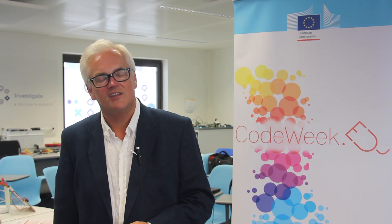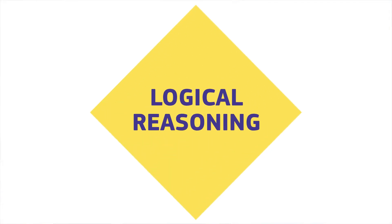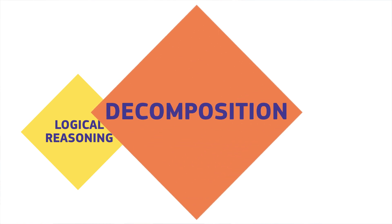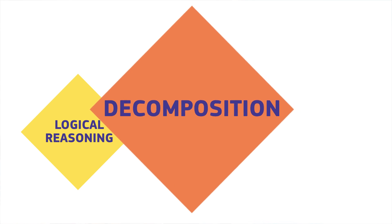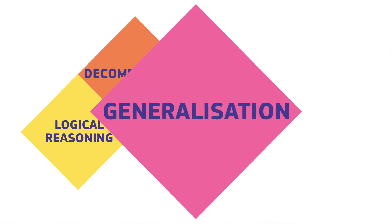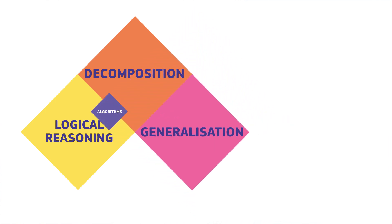In school it can be helpful to think about some of the common elements of computational thinking. For example, logical reasoning: encourage your students to make predictions and to give explanations whether or not they're working with computers. Decomposition helps students to break big problems down into smaller parts whether they're working on their own or as part of a team. Generalisation: get your students looking for patterns or thinking about similar problems.